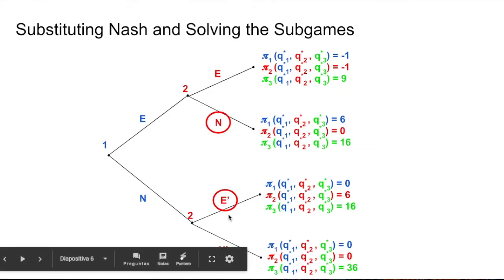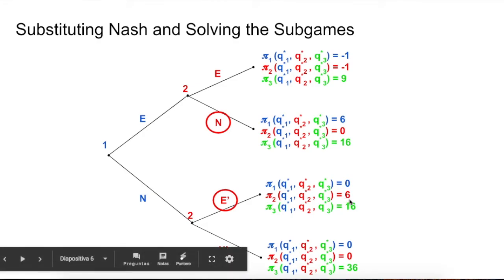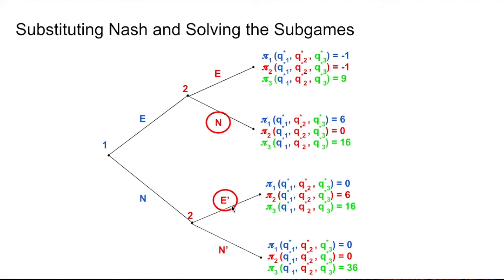In the lower node, it's the same. It's the alternative of choosing E or N. And that one is going to compare between choosing six or zero. So this firm number two is going to choose E. That's the best possible outcome.